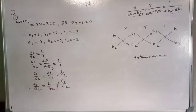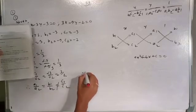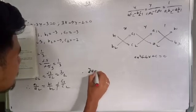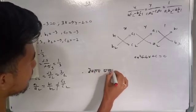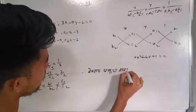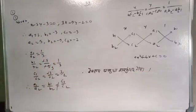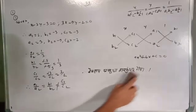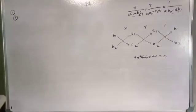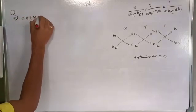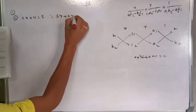Therefore, a1 by a2 is equal to b1 by b2, but c1 by c2 is not equal. So this system has no solution. The next question uses the equations: 2x + y = 5 and 2x + 2y = 8.